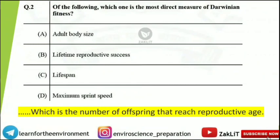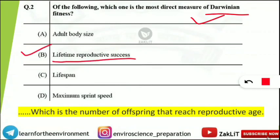The next question asks: which one of the following is the most direct measure of Darwinian fitness? This is from the genetics portion — read every option very carefully. The correct option is B: lifetime reproductive success. It is one of the most direct measures of Darwinian fitness.